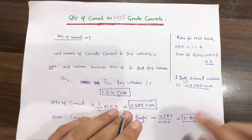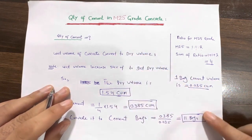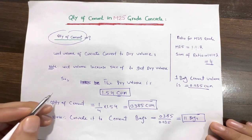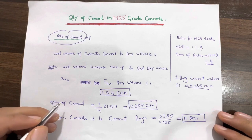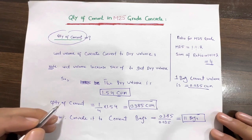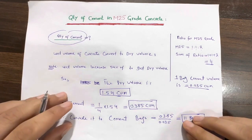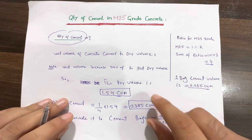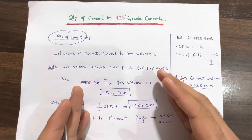In this sum of ratio we will find the quantity of cement in M25 grade of concrete. When finding the volume of concrete — whether it's a beam, column, slab, foundation, or any RCC structure — that is the wet volume, and the wet volume must be converted to dry volume. This is because from the market we bring dry materials: cement, sand, and aggregate. Wet volume is increased by 54% to get dry volume.